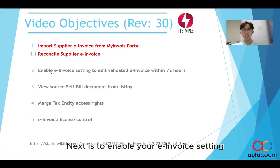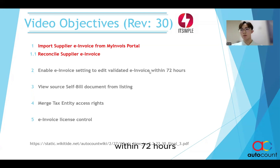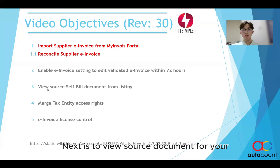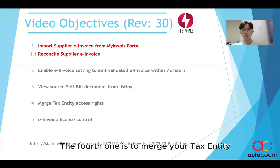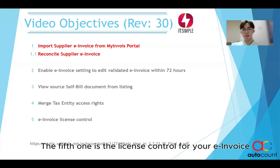Next is to enable your e-invoice setting to allow you to edit your validated e-invoice within 72 hours. The next is to view source document for your self-billed from your listing. The fourth one is to merge your tax entity, to allow your user to set whoever can merge the tax entity. And the fifth one is the license control for your e-invoice.